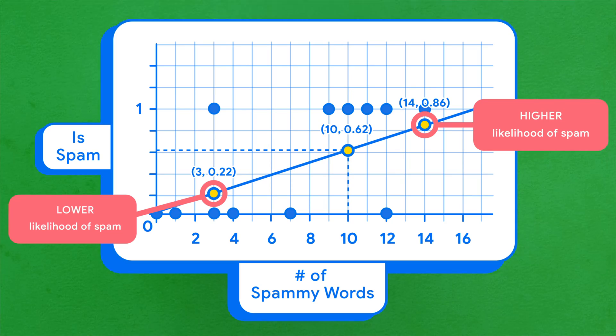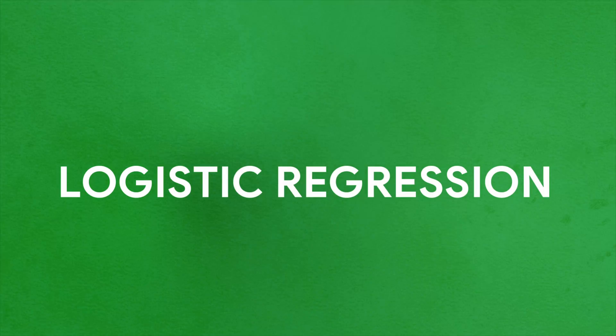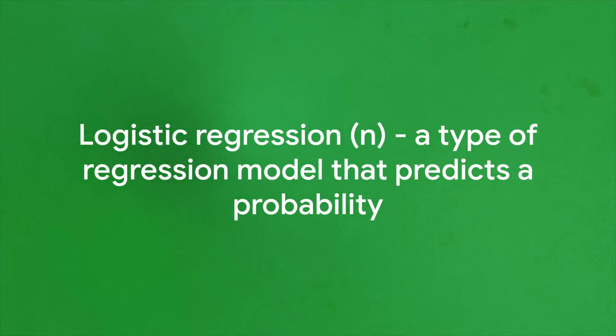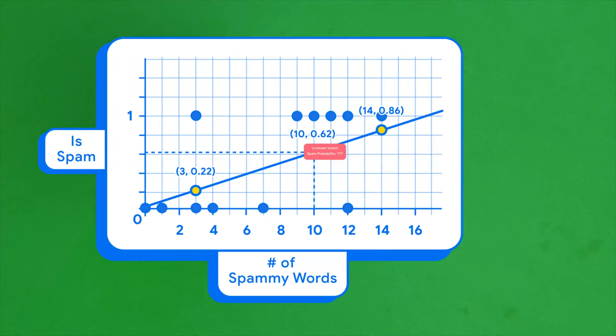This type of regression task is called logistic regression. So how do we get our linear model to output a probability?